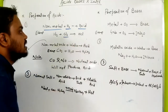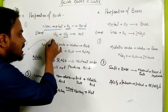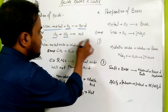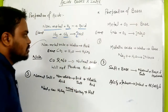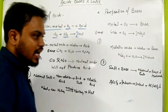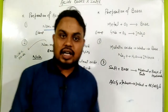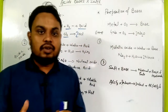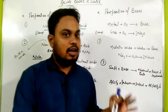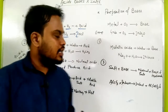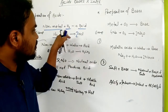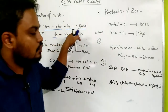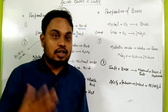For example, chlorine is a non-metal. When it reacts with hydrogen, it forms HCl — we put a 2 here to balance. When iodine reacts with hydrogen, it forms hydrogen iodide. So, when non-metal reacts with hydrogen, it forms acid.